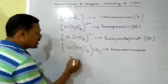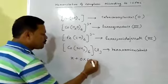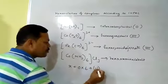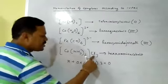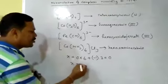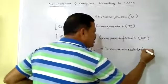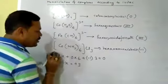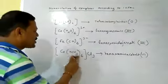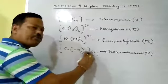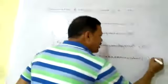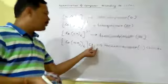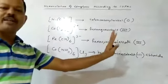Now find the oxidation number. X + (0 × 6 for NH₃) + (−1 × 3 for Cl) = 0, so X = +3. Cobalt is in the +3 state. So the complex name is hexaaminecobalt(III). One counter ion is present: Cl⁻. To write the counter ion, just write the name of the ion — i.e., chloride. Even though there are 3 chlorines, don't write trichloride — whether there are 2, 3, or 4 chlorines, just write chloride.